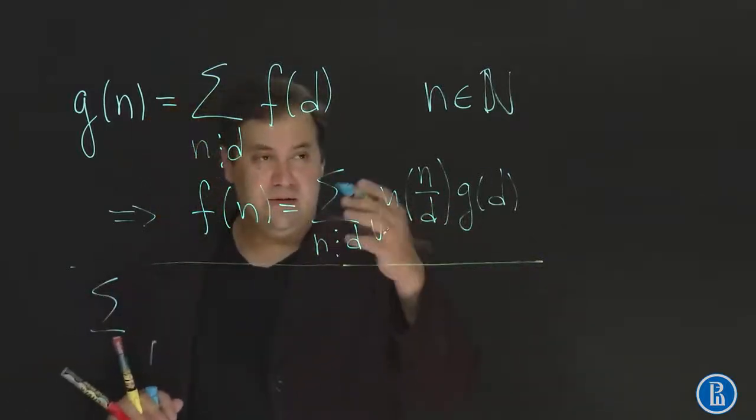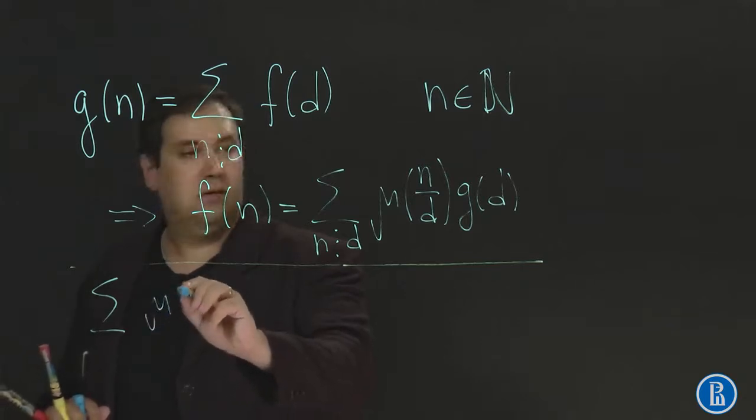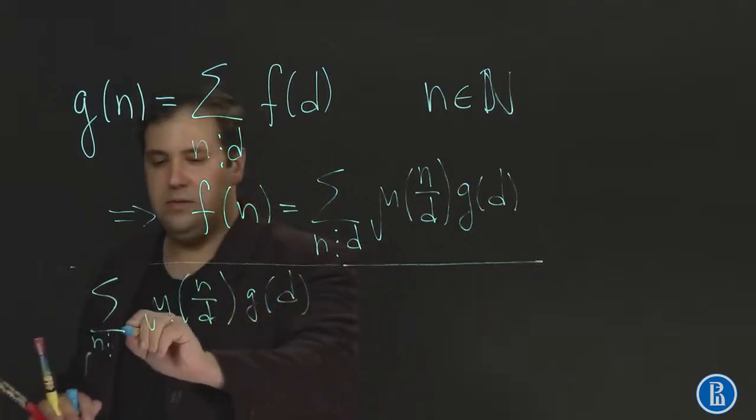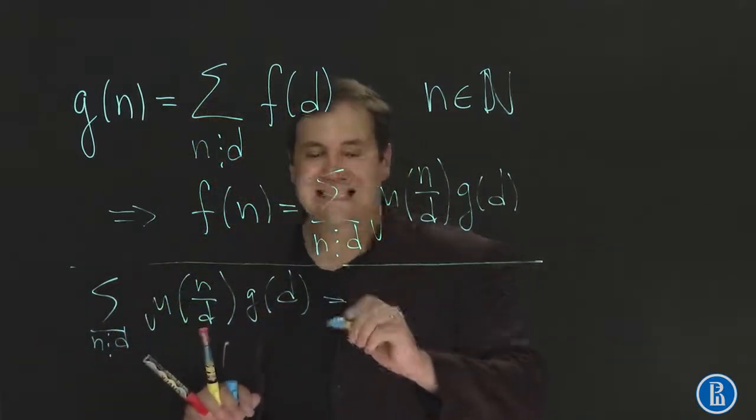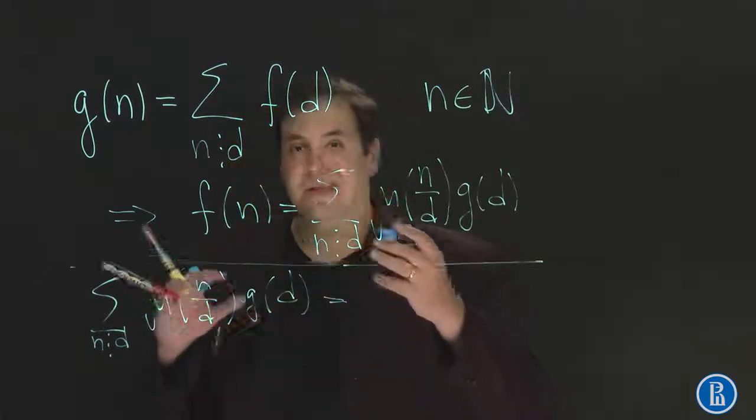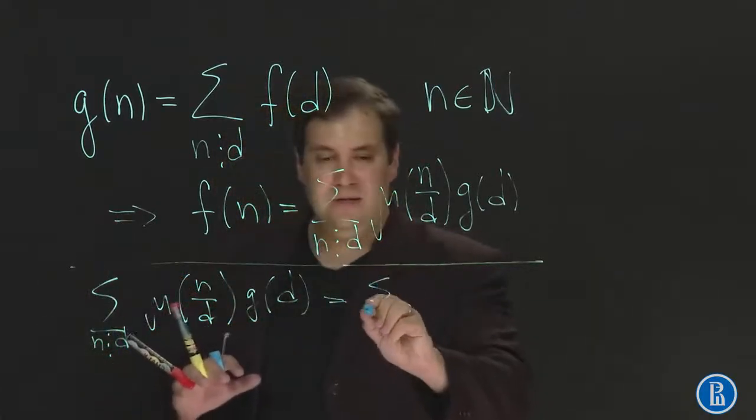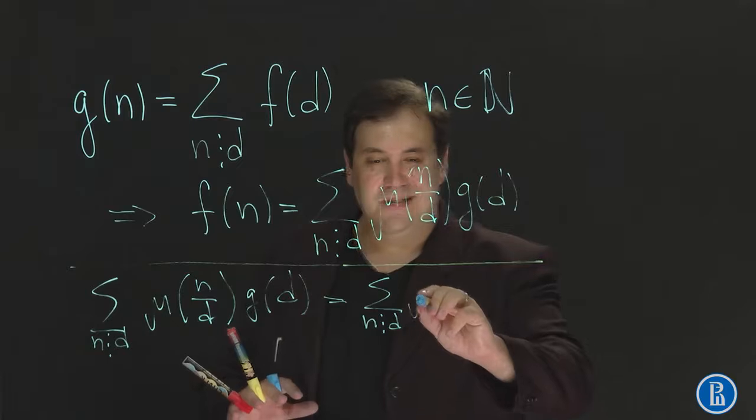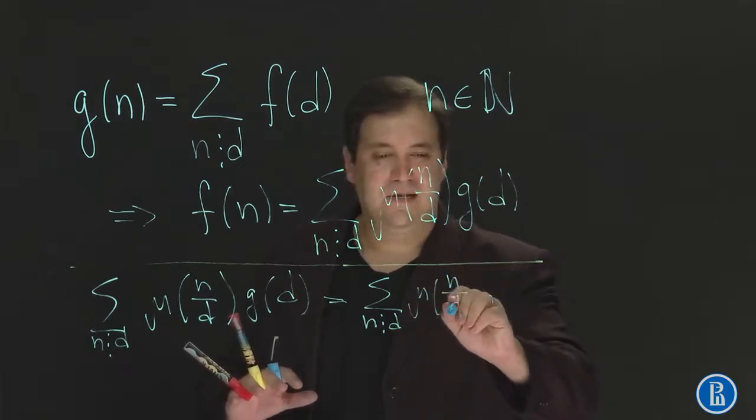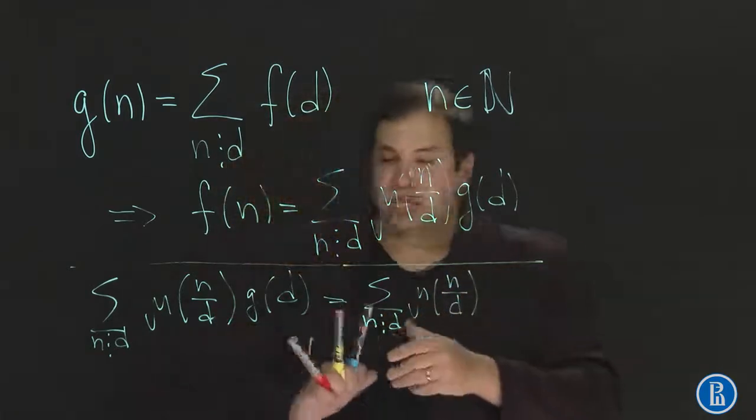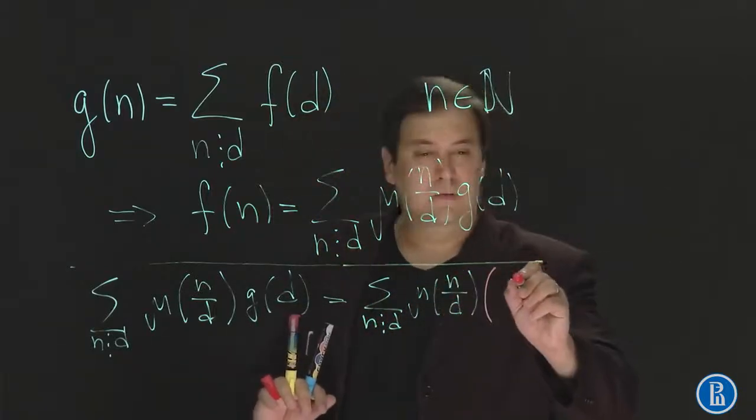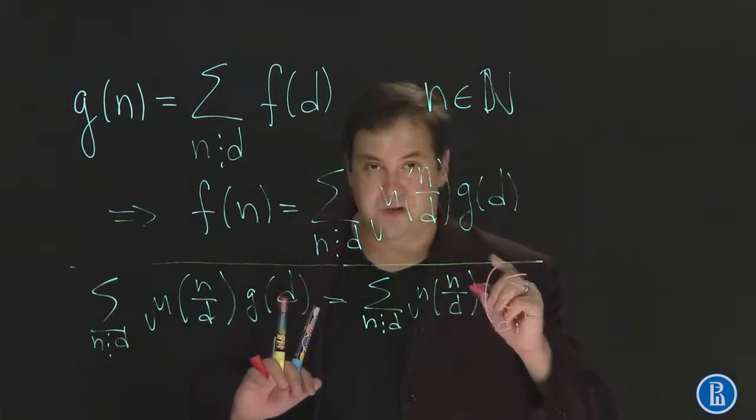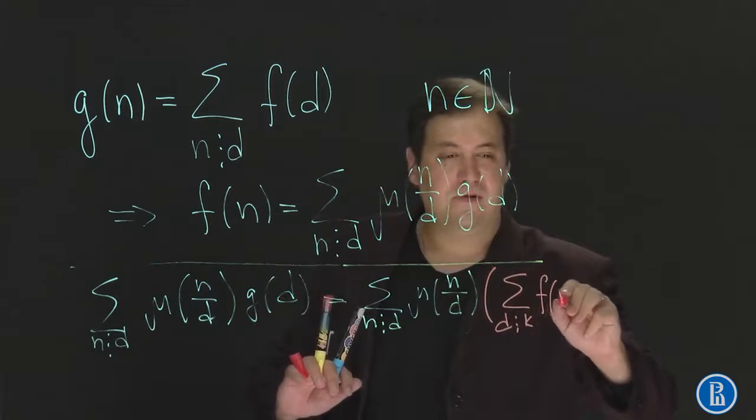First I'll just rewrite this expression and then substitute g of d using the original formula. So we know that g of d is equal to sum over all divisors of d of f of k.